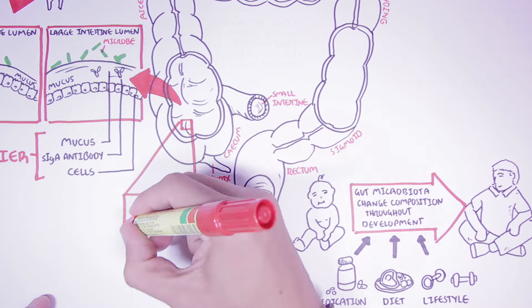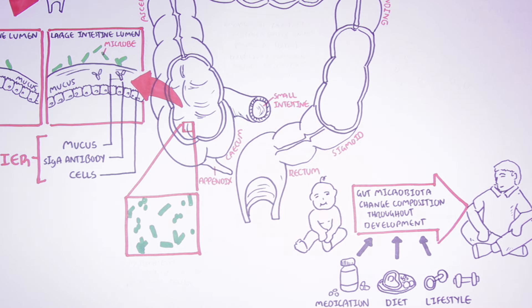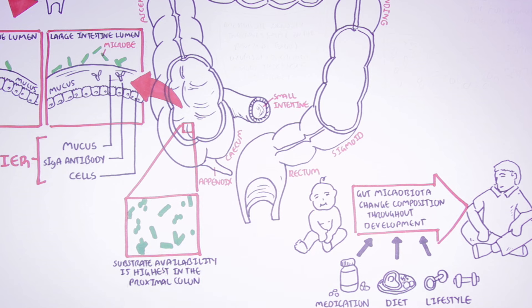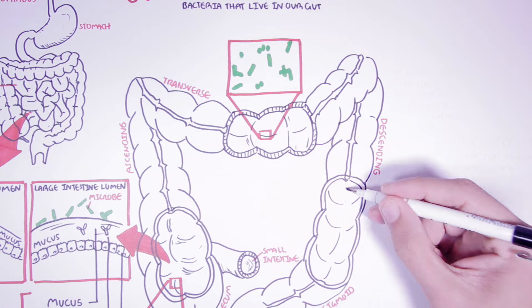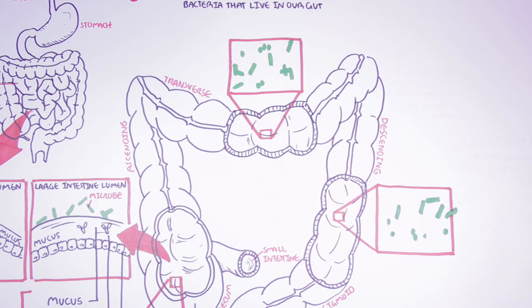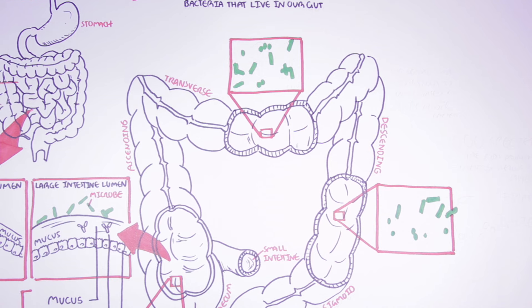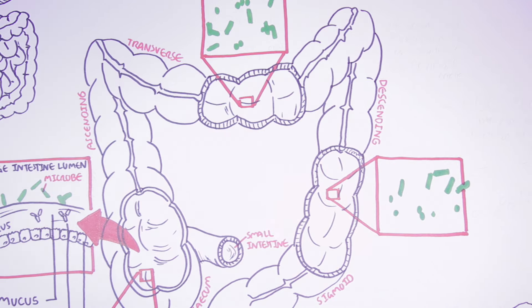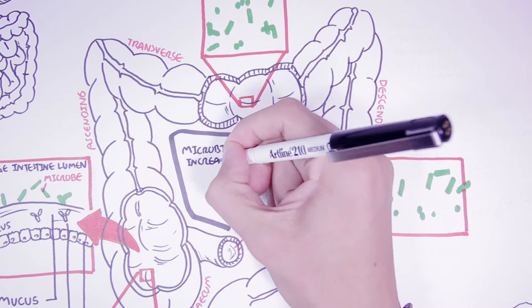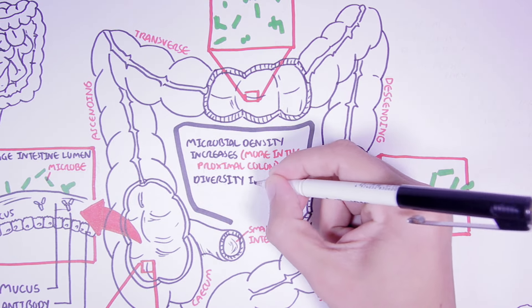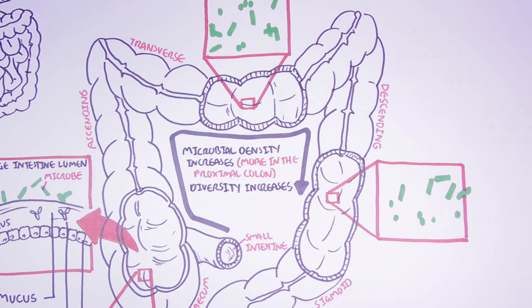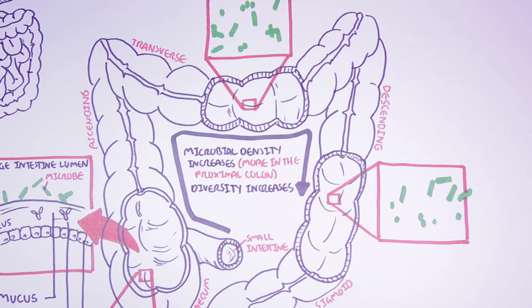In the large intestine, the bacteria are mainly found in the proximal colon, because this is where substrate availability is highest. But there are still many bacteria everywhere else, such as the transverse colon and the descending colon. The bacterial density increases from the duodenum of the small intestine to the large intestine, and we find especially a lot of bacteria in the proximal colon.